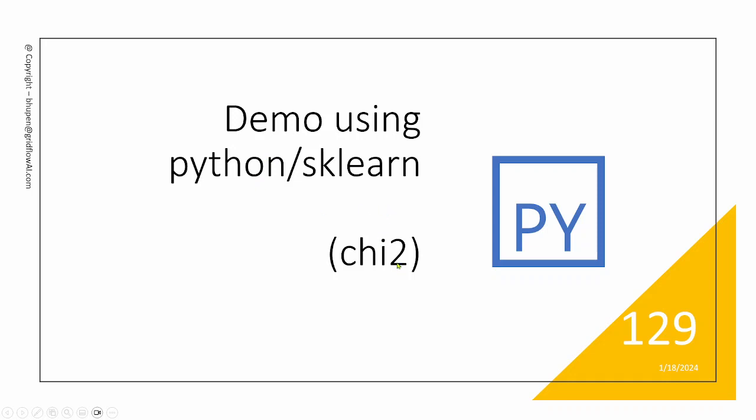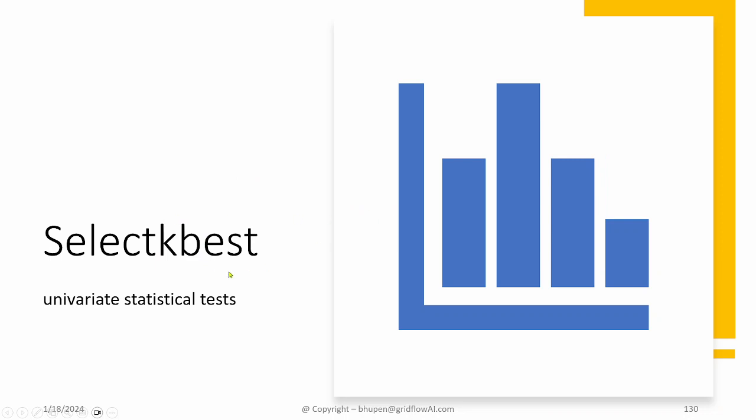That was a demo on chi-square test. I hope you liked the demo. And next, we'll talk about one more method in the filter category, which is called select k-best.